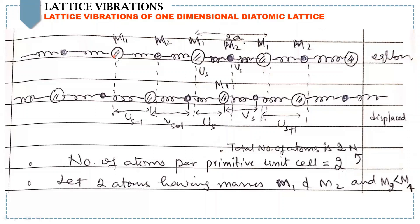In this lecture, suppose there is a chain of atoms having two different masses M1 and M2. M1 is bigger than M2. When the chain is at equilibrium, the position of M1 is U_S and the position of M2 is V_S. After some displacement, M1 is displaced to U_S and M2 is displaced from its equilibrium position to V_S. The unit cell equals 2A, which is the distance between mass M1 up to the same mass M1, and this unit cell contains two atoms.